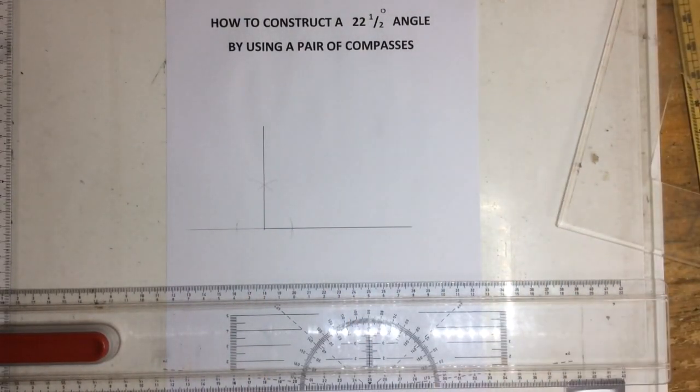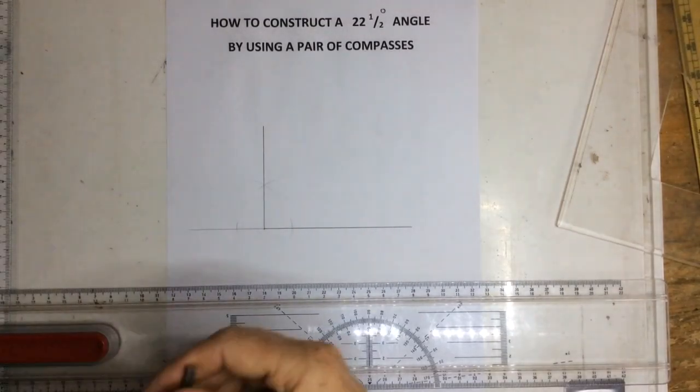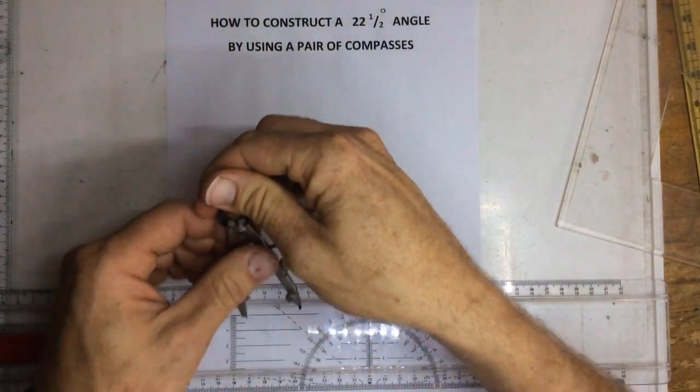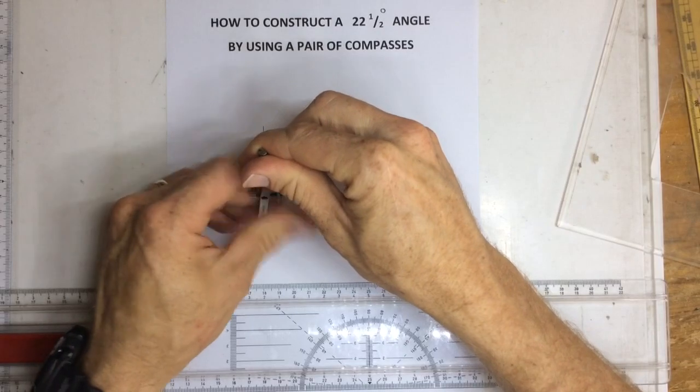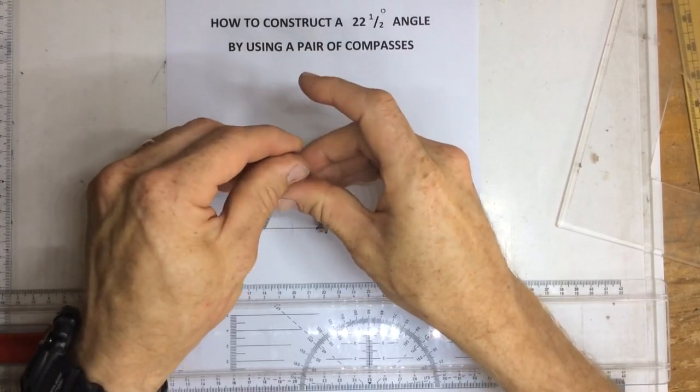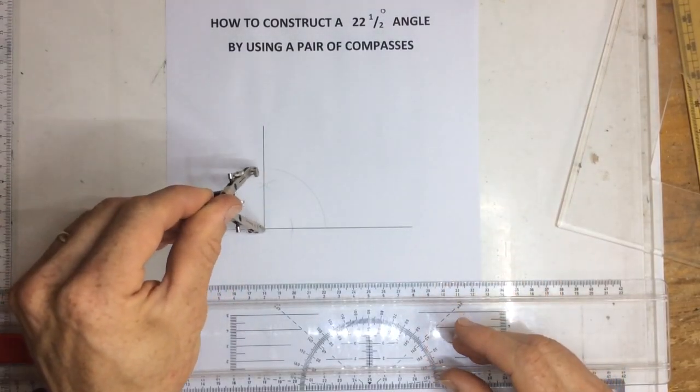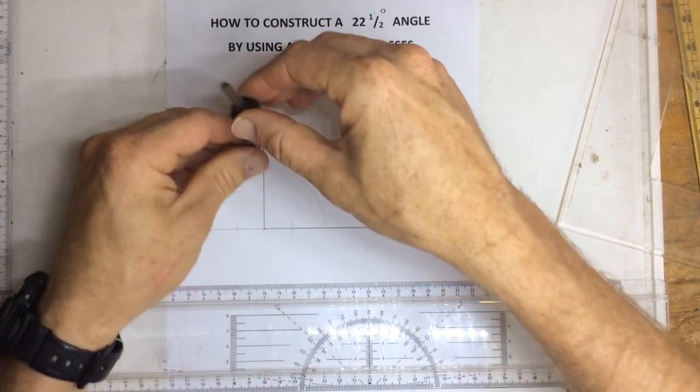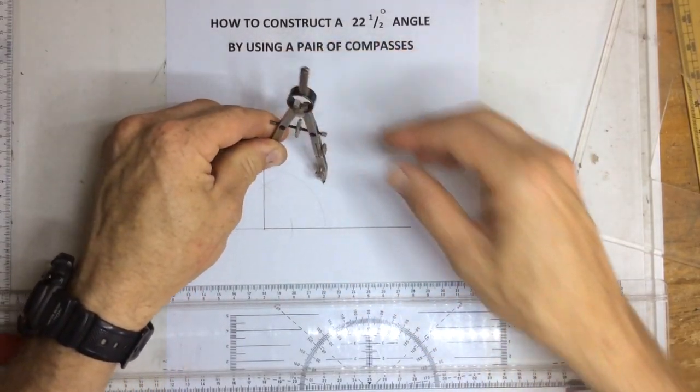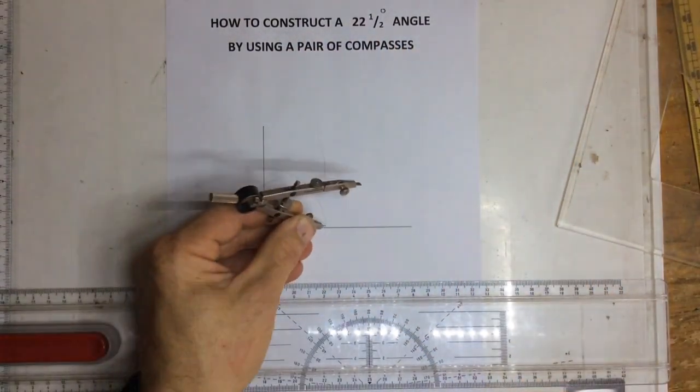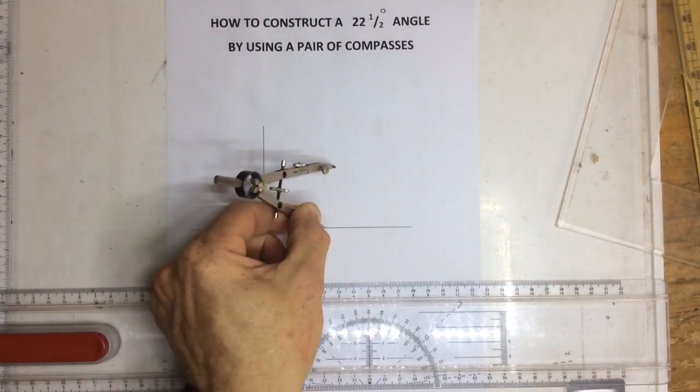Right, once I've got that 90 degree angle, what I'm going to do is I'm going to take my pair of compasses, I'm going to extend them far out over here and I'm going to draw an arc. And taking that same radius, I'm going to draw an arc over there and an arc over there.